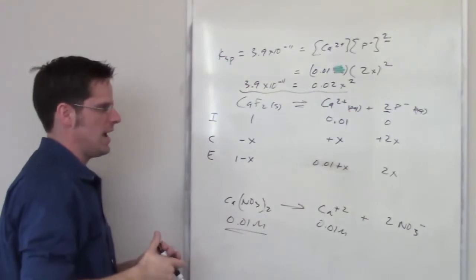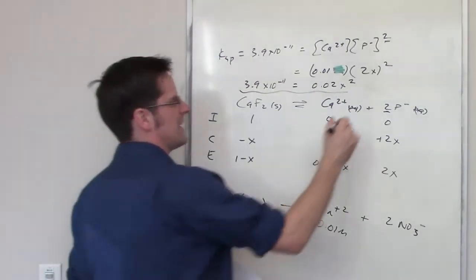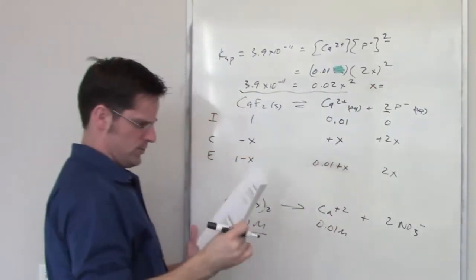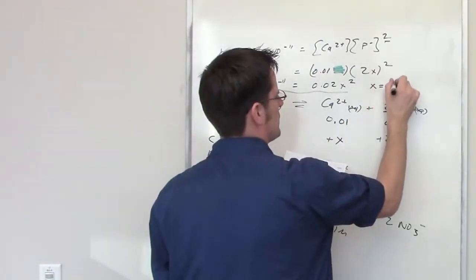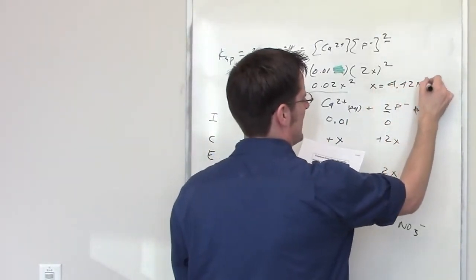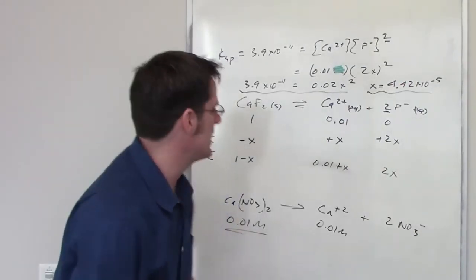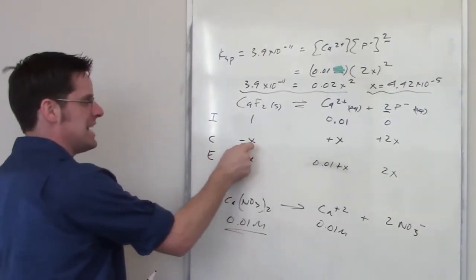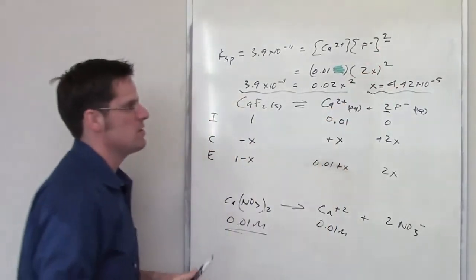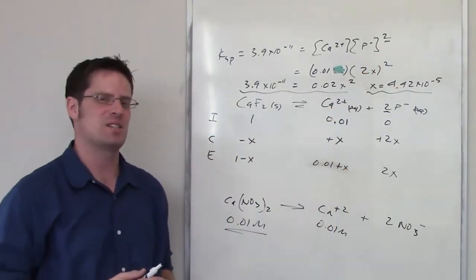All I have to do now is solve for x. Now I did that earlier and I got x as being equal to 4.42 times 10 to the negative 5th. It's asking me what the molar solubility is of calcium fluoride, and because that value right there, x, is equal to x, that is the final answer to this question.